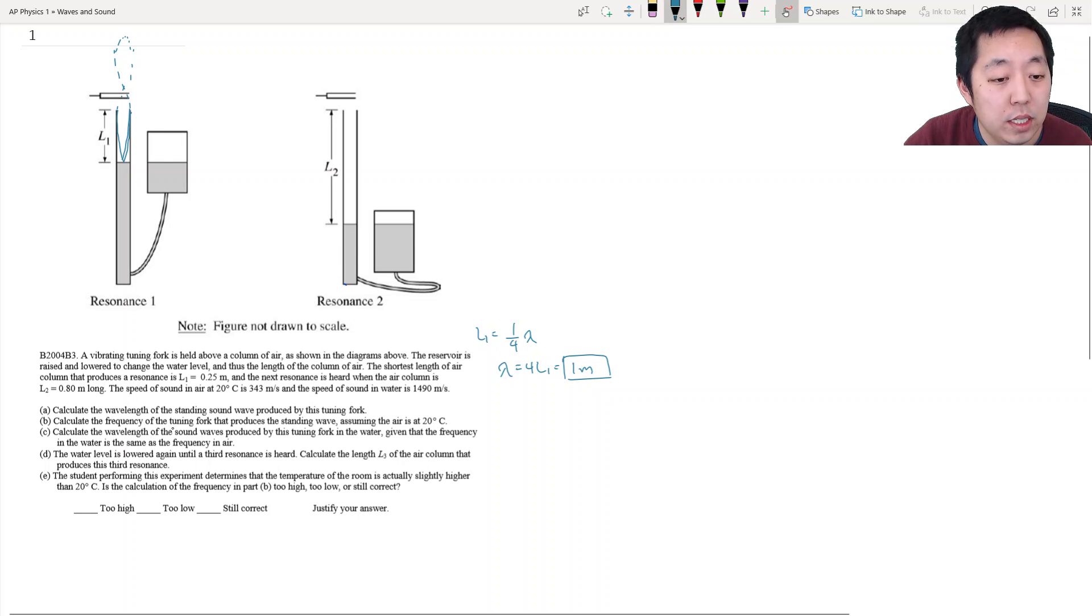The frequency, so that's the wavelength. The frequency that is produced, well, V is equal to lambda F. That's the equation that relates the velocity of the wave, wavelength, and frequency of the wave. V over lambda, the velocity of the wave in air is 343 meters per second, divided by 1 meter. So that's 343 hertz.